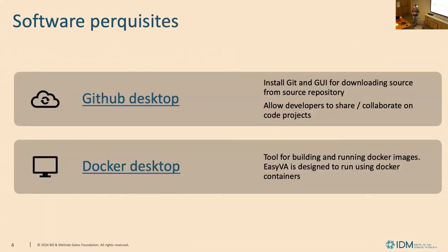Software prerequisites to install ECV8. Can I have a show of hands to see who has installed GitHub or Git on their computer? So what is Git or GitHub Desktop? It installs Git and provides a GUI for downloading source code repositories. It allows users to share and collaborate on code projects. The second prerequisite is Docker Desktop — a tool for building and running Docker images. ECV8 is designed to run using Docker containers.